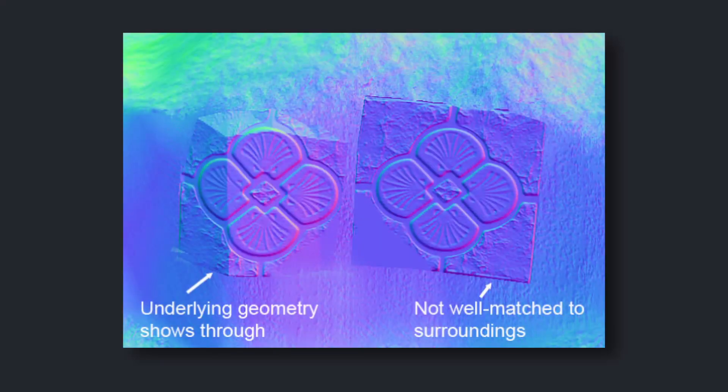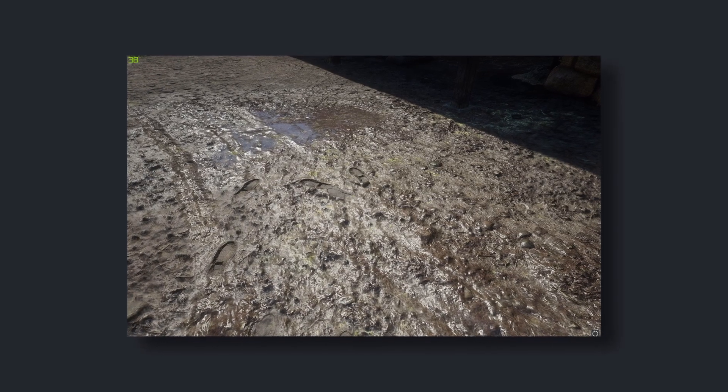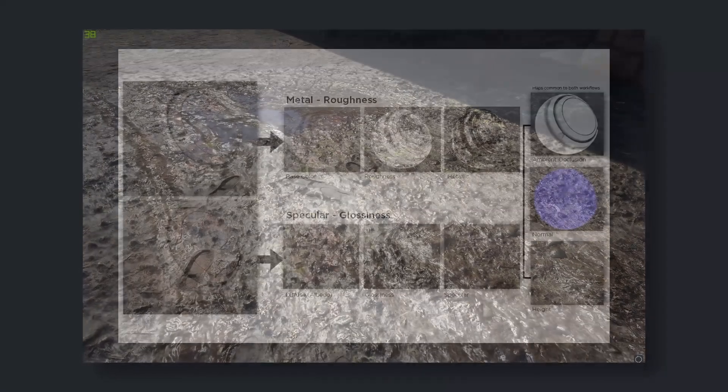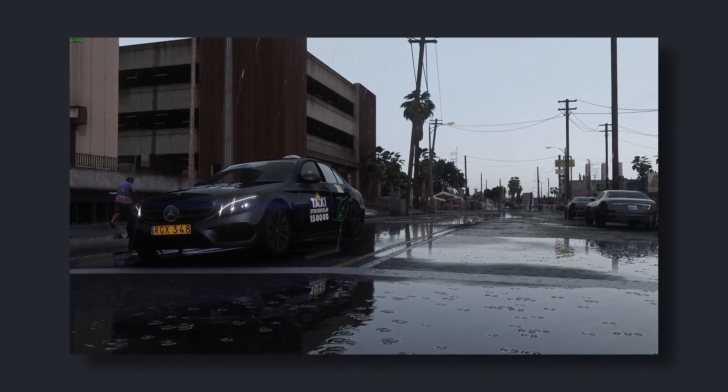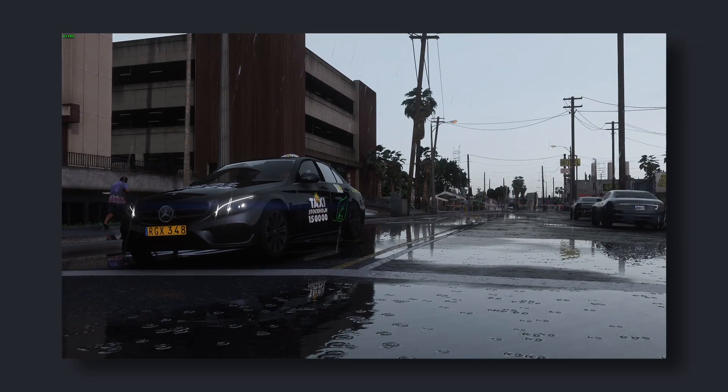But decals can do so much more than color — they can affect the whole surface underneath. Decals can modify normals and roughness to create fake bumps like footprints, roughness and metalness to make surfaces look rusty, dusty, or wet. If you've ever seen a puddle appear in a game while it's storming, it's probably just a decal modifying the material properties underneath.